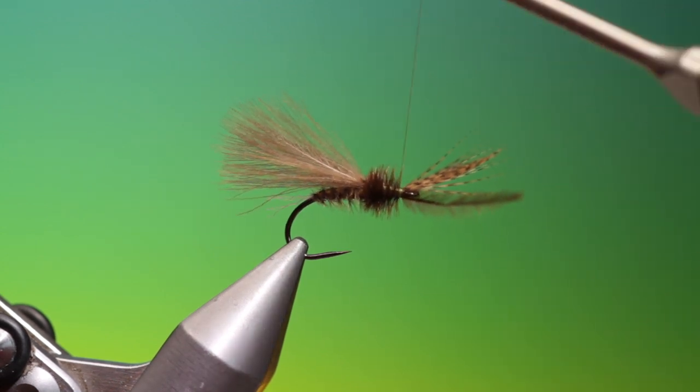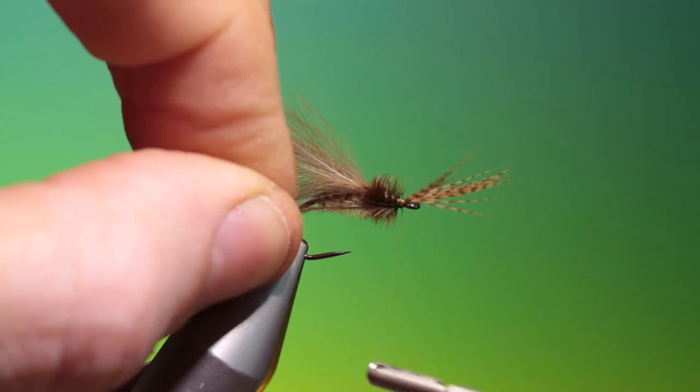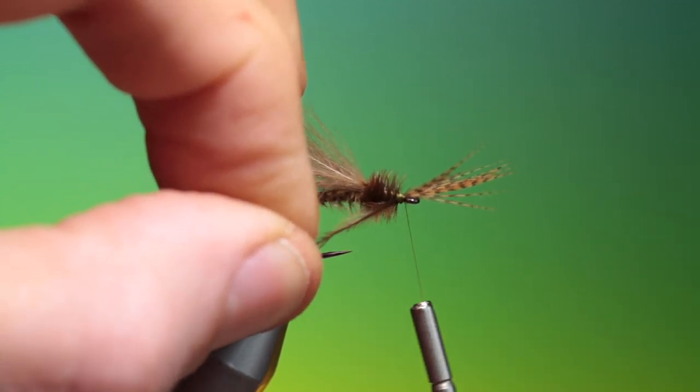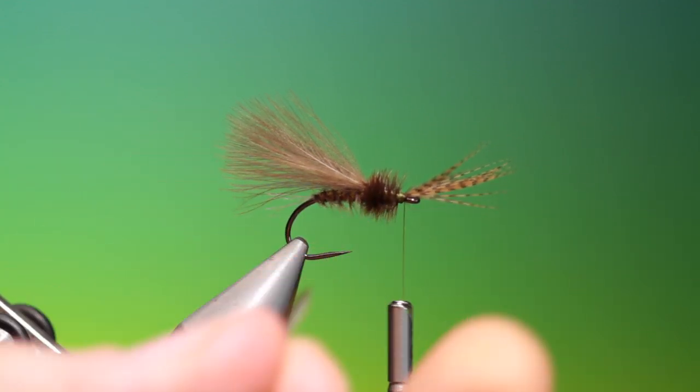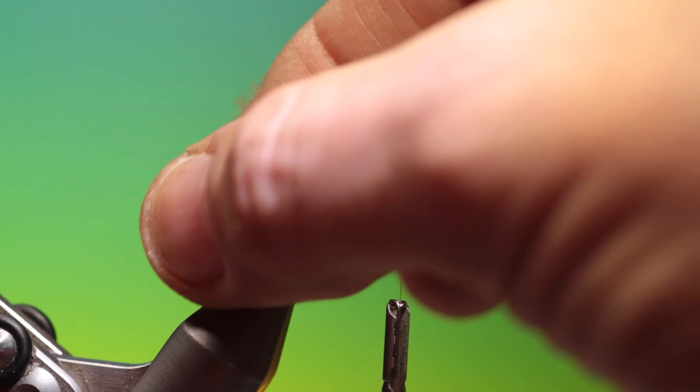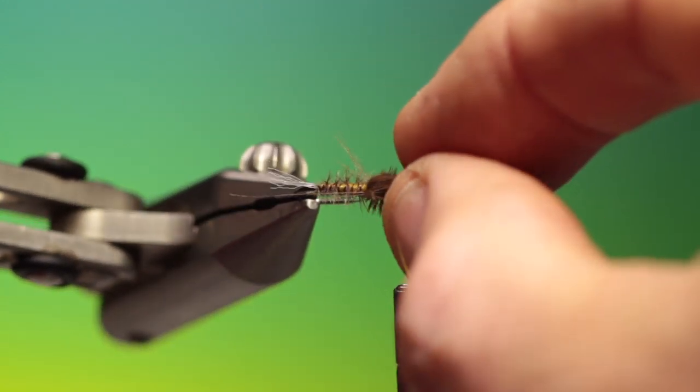And we just go over a few times like that and then we pull it back and give it a couple of wraps in front and then we can remove that. I'll just turn my vise right, take the CDC hackles.